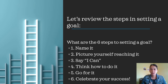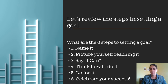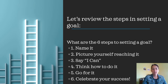Step two is to picture yourself reaching it — visualizing yourself achieving your goal. Step three is saying 'I can,' which is positive self-talk, giving yourself the confidence that you can reach your goal. Step four is thinking about how you're going to do it — making your action steps. Step five is to go for it — accomplish your goal. And step six, once you've accomplished your goal, is to celebrate your success.